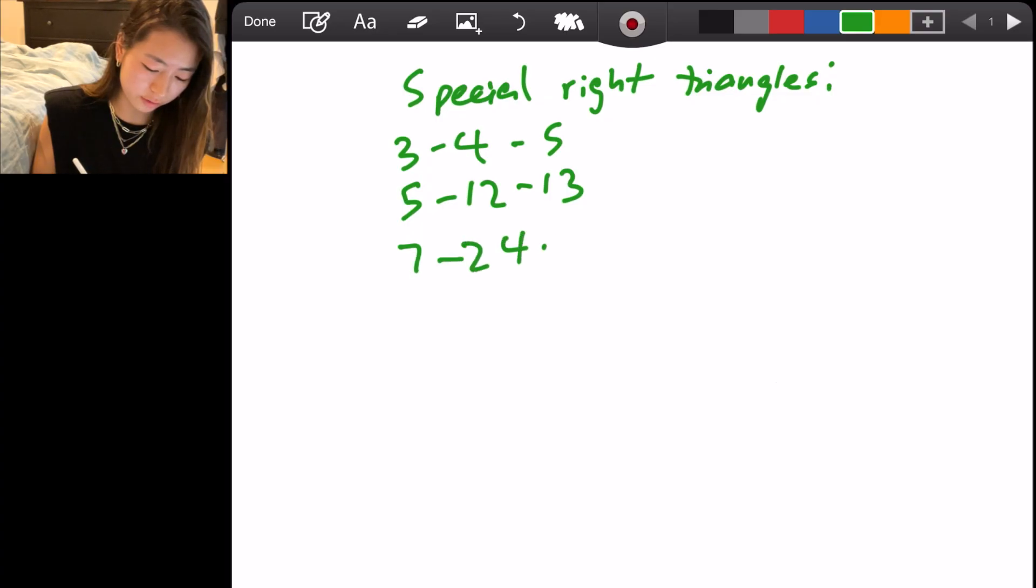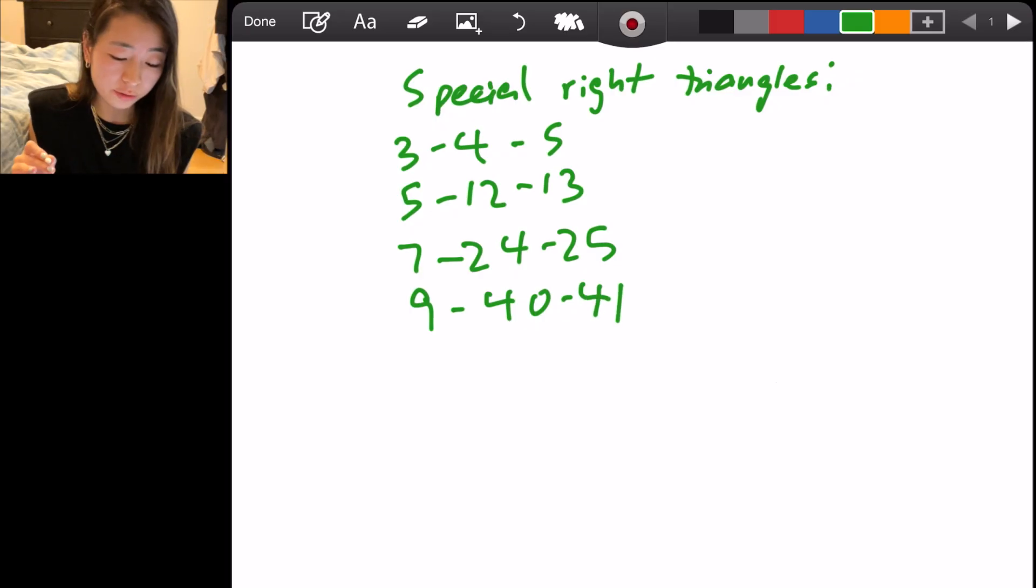7, 24, 25, and 9, 40, 41. Now before you freak out and think, oh my gosh, I have to memorize more stuff. This is how you know these without memorizing them. So notice that for the shortest side length, here's 3.